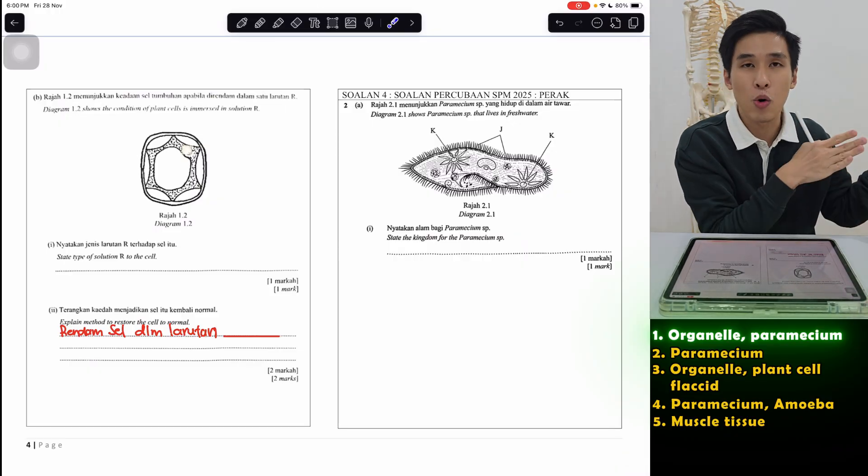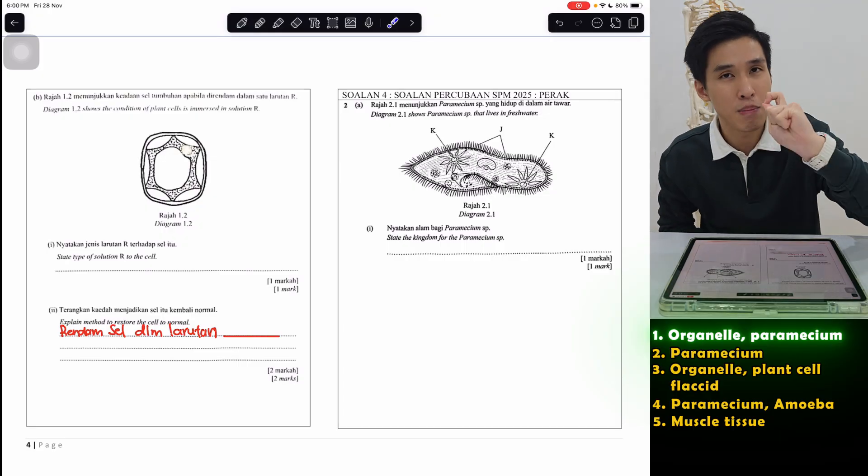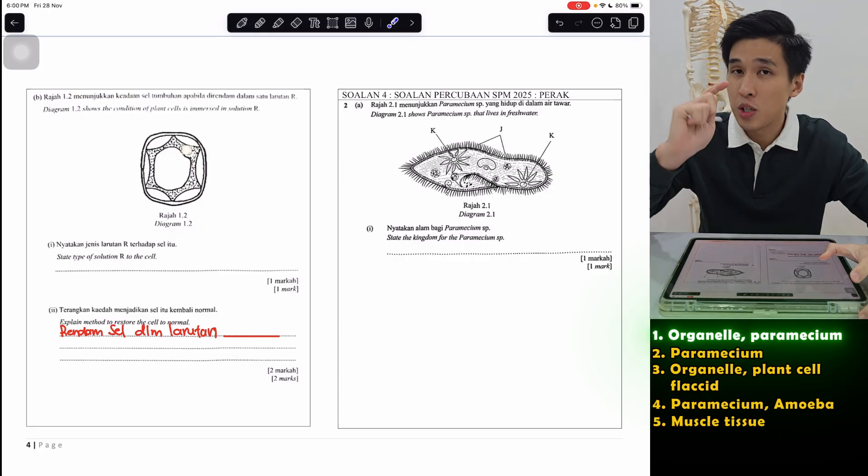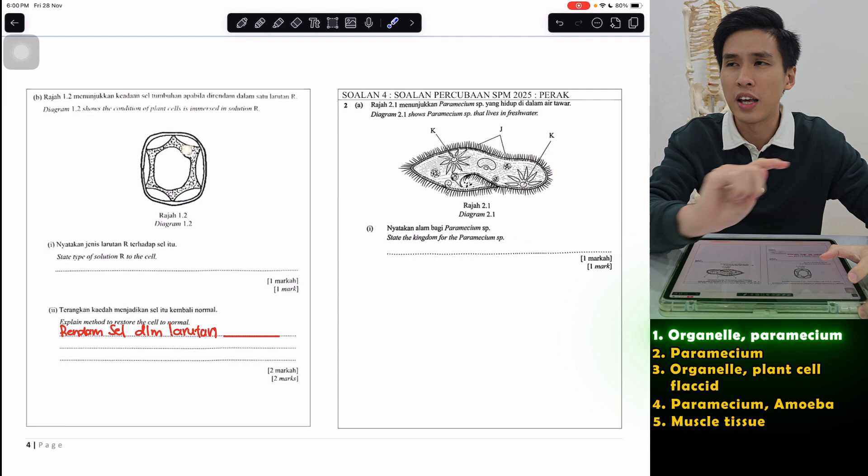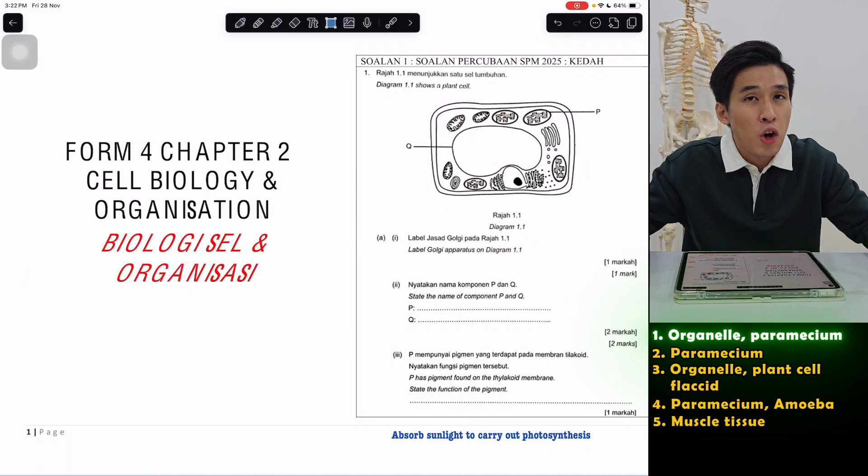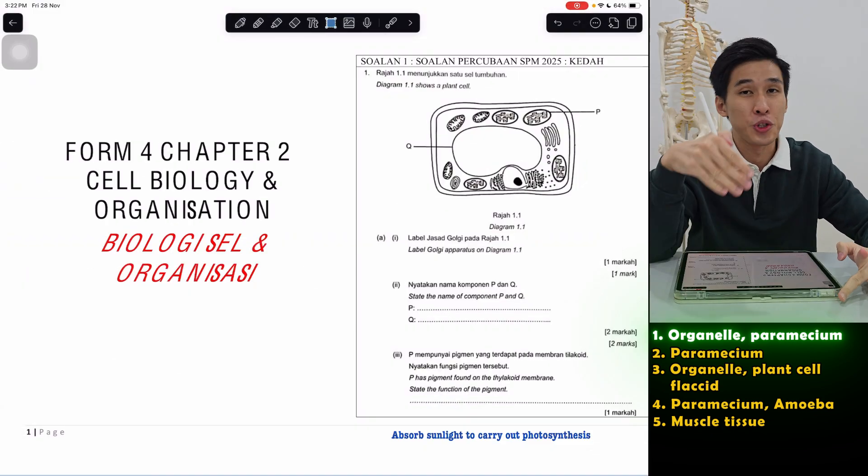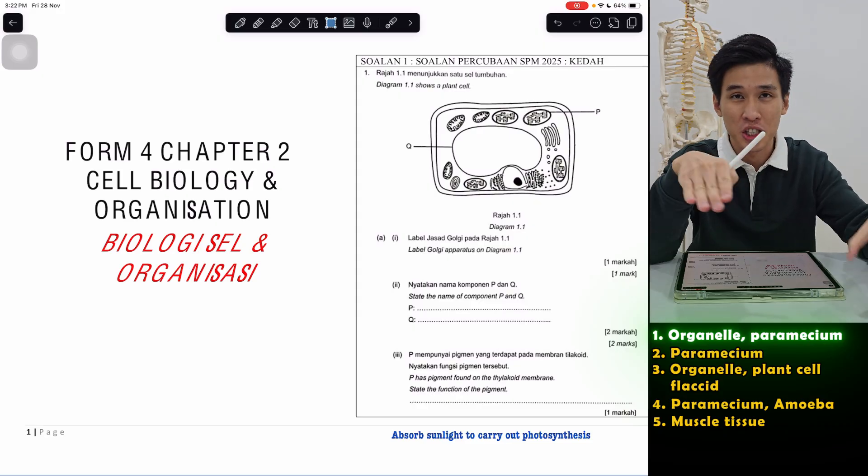So other than your organelles, the cell component, paramecium and amoeba, study more of it, especially paramecium. So we're going to go through a lot of paramecium. You can use this as revision actually. The soft copies for these questions are already in the description below along with other chapters for this year's trials.